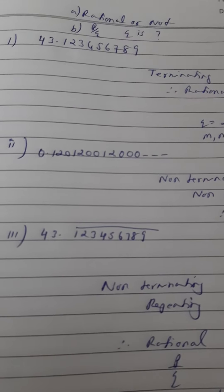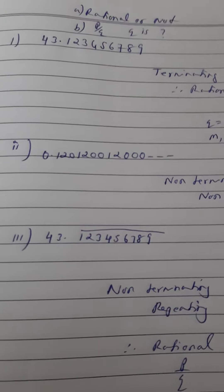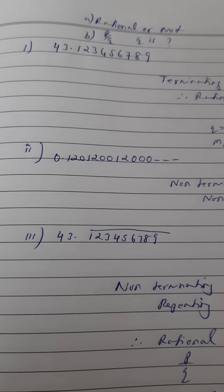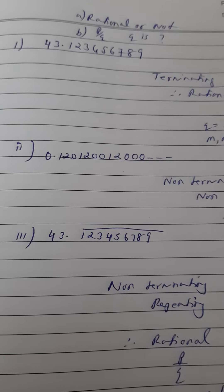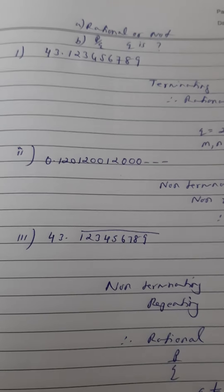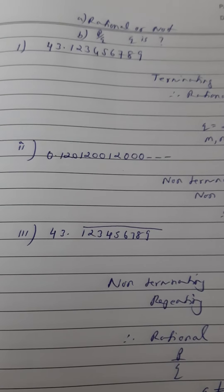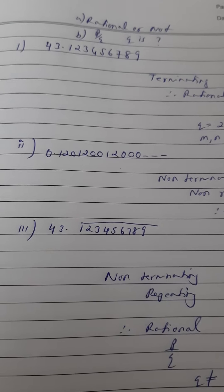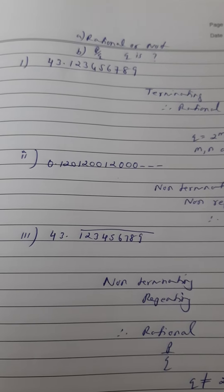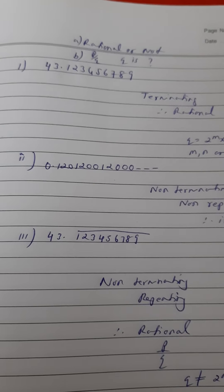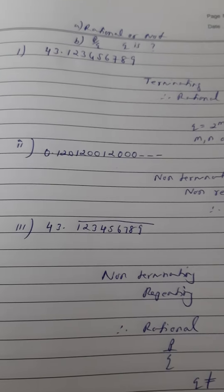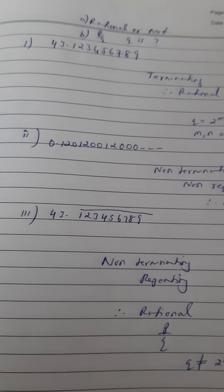We move on to the last question of the exercise and of the chapter. You are given three numbers: the first number is 43.123456789, the second number is 0.120120012000 and it goes on, and the third number is 43.123456789 with a bar on top. We have to classify whether they are rational or not, and if rational in the form p/q, what can we say about the prime factors of q.